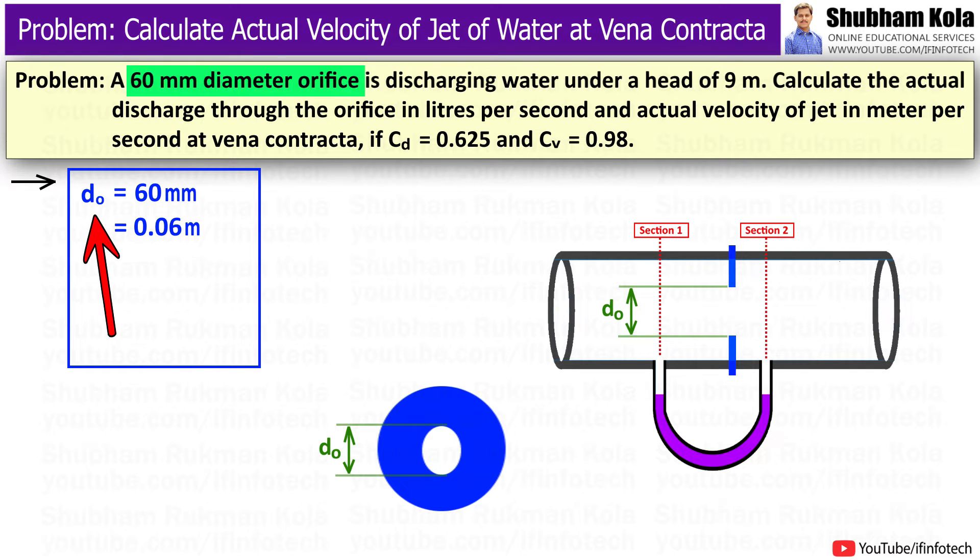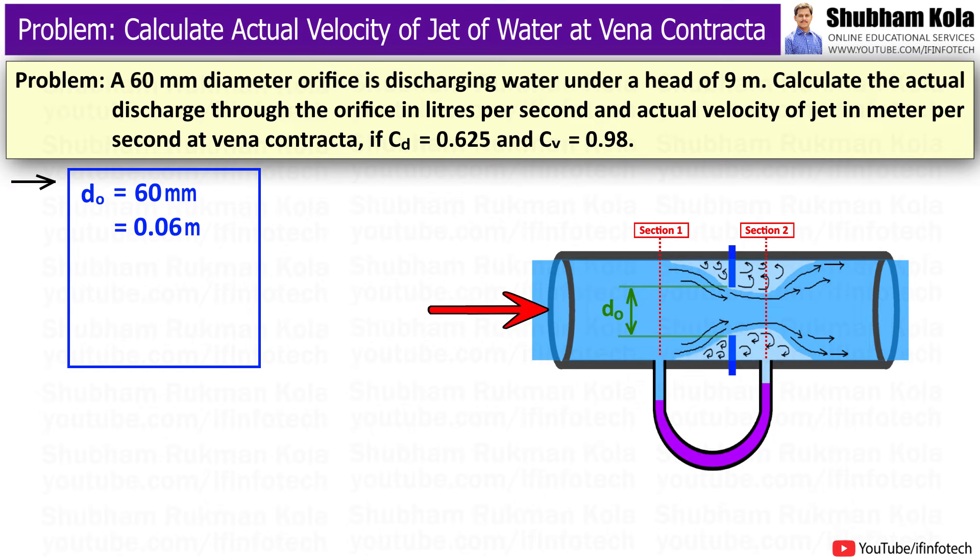that is 0.06m, denoted as d₀. The water is flowing in the pipe from left to right, and is discharging from the orifice under a head of 9 meters, that means h = 9 meters of water. The coefficient of discharge CD = 0.625 and CV = 0.98.